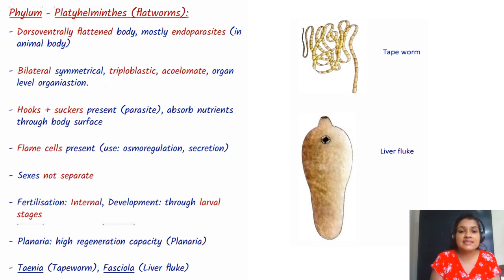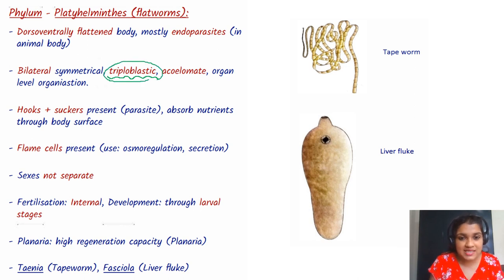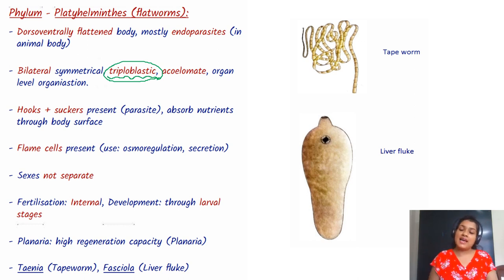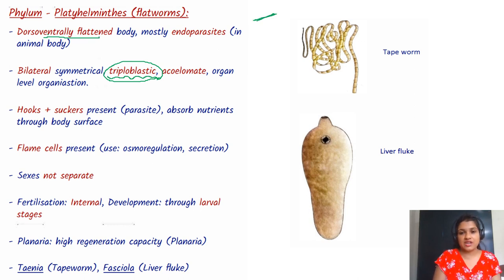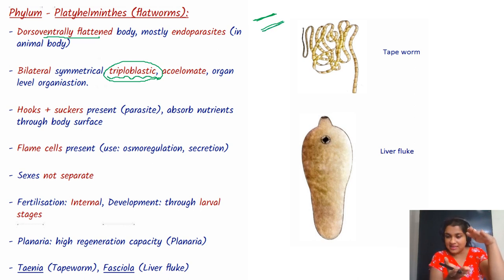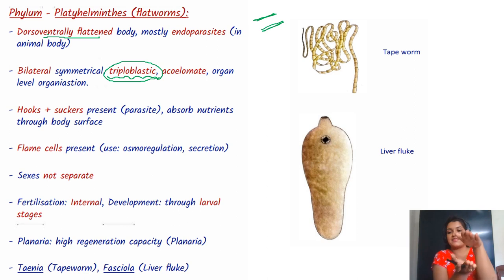Now let us come to phylum Platyhelminthes. This is a very important phylum because the triploblastic organism starts from Platyhelminthes. They are dorsoventrally flattened, meaning the upper part is slightly different from the lower surface.